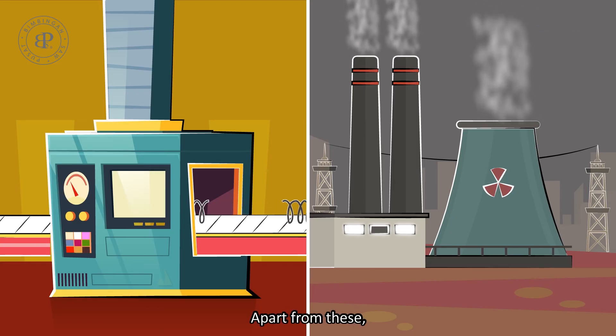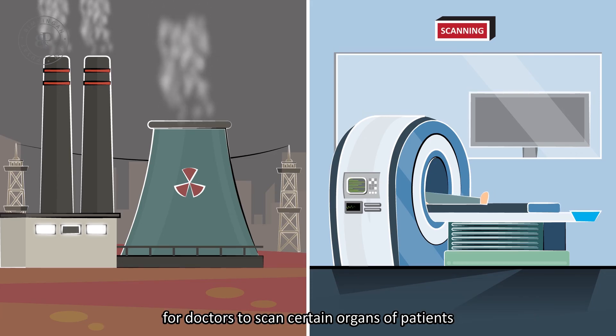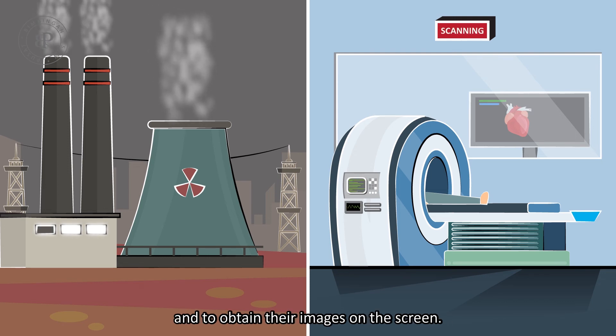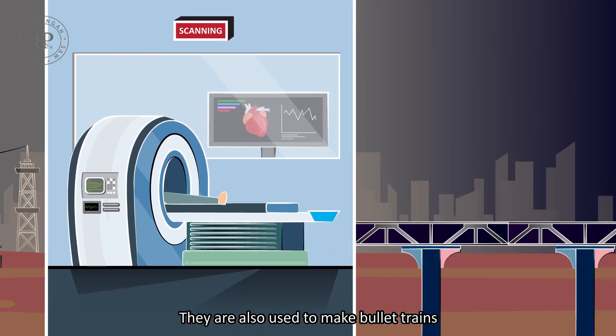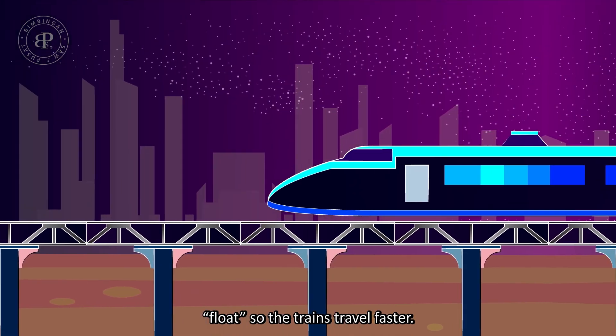Apart from these, superconductor electromagnets are also used in resonance machines for doctors to scan certain organs of patients and to obtain their images on the screen. They are also used to make bullet trains float, so the trains travel faster.